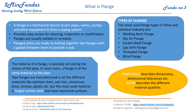The material of the flange is normally the same as that of the pipe. Pipe flanges are manufactured in many different materials like stainless steel, cast iron, aluminum, bronze, plastic, etc., but the most commonly used material is forged carbon steel with machined surfaces.